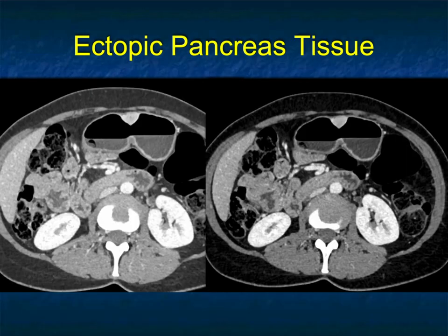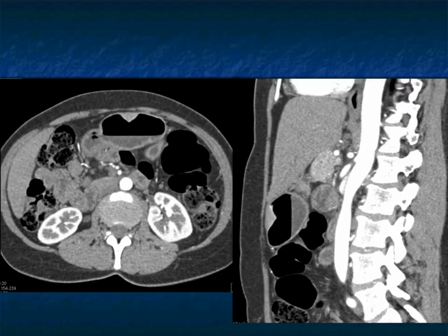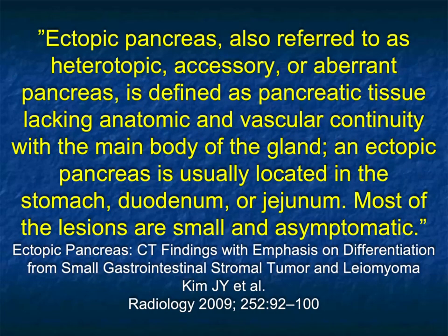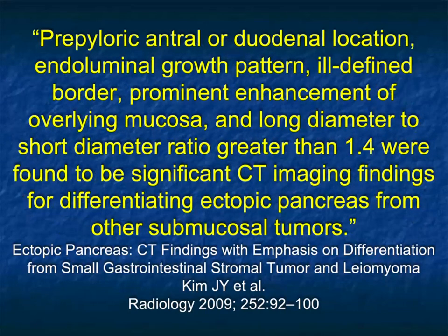Here's another example in the midbody of the stomach. It's a flat polypoid lesion that's enhancing, has a broad base, very nicely shown on the sagittal view as well. Ectopic pancreas, also called heterotopic, accessory, or aberrant pancreatic tissue, is defined as pancreatic tissue lacking anatomic and vascular continuity with the body of the gland. Ectopic pancreas is usually located in the stomach, duodenum, or jejunum. Most lesions are small and are incidental findings, and patients are not symptomatic.